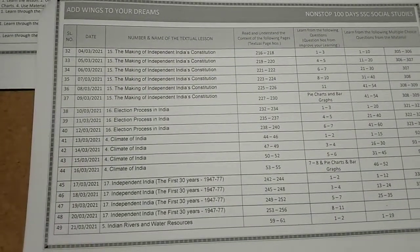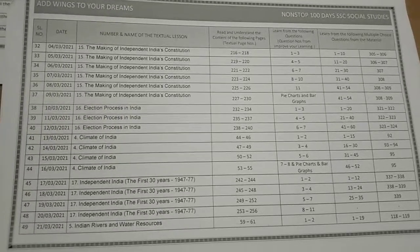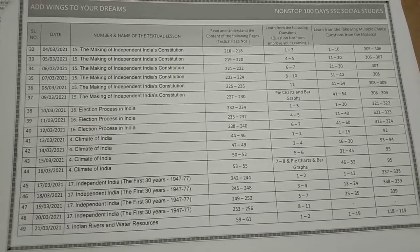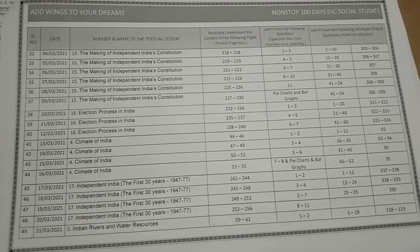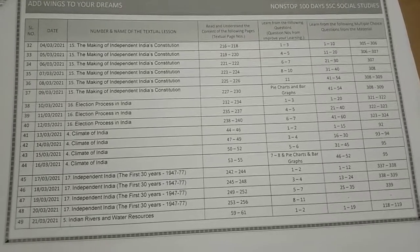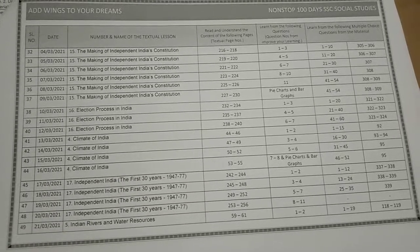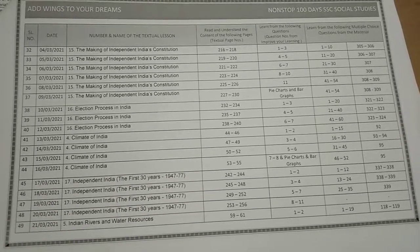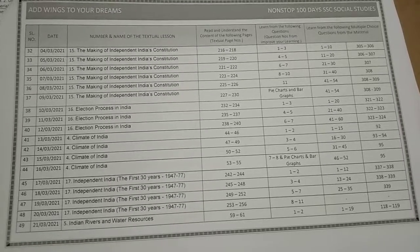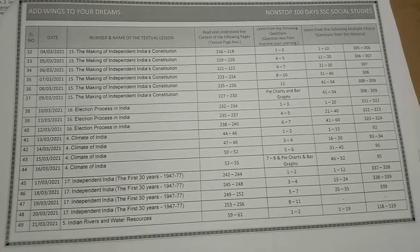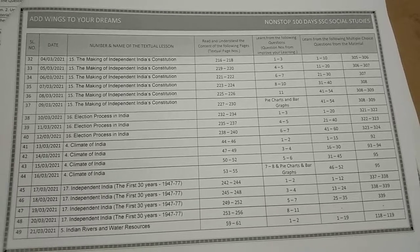After completion of the FA-1 Slip Test, from 4th March, we have lesson number 15, 'The Making of India's Constitution', up to 9th March 2021. After that, we have 3 days for 'Election Process in India', then 4-day sessions for 'Climate of India', followed by 4-day sessions for 'Independent India'. From 21st March 2021, we have lesson 5, 'India — Rivers and Water Resources'.